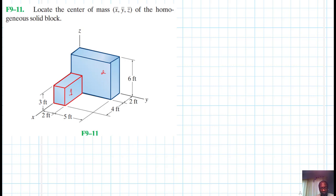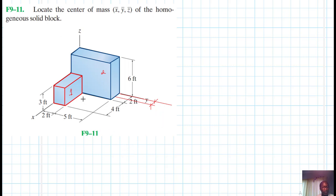Now let's write down the centroid coordinates. Starting along the X direction — I'll extend this line. Along the X, this point here for block one is the centroid along X. I'll mark it like so. And then for block two along X, I'll do the same.